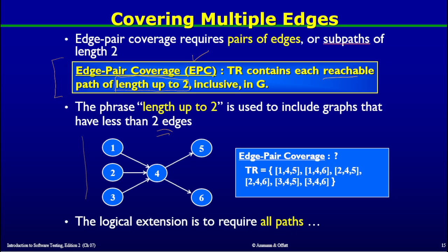Here we have a graph with multiple initial nodes. They have edges towards node four, and node four has edges going towards node five and node six. The test requirements in this case are to cover: edge pair (1,4,5), edge pair (2,4,5), edge pair (2,4,6), edge pair (1,4,6), edge pair (3,4,5), and edge pair (3,4,6).